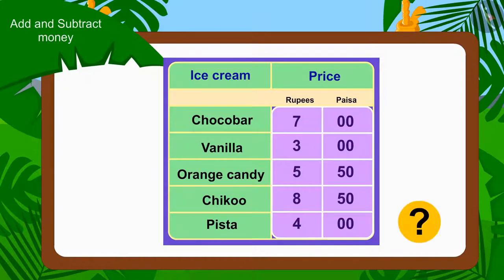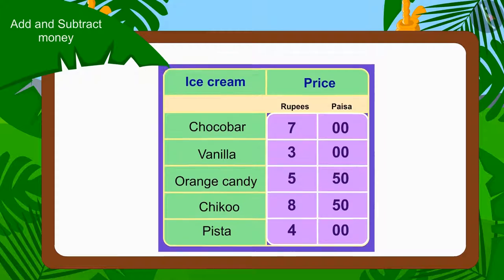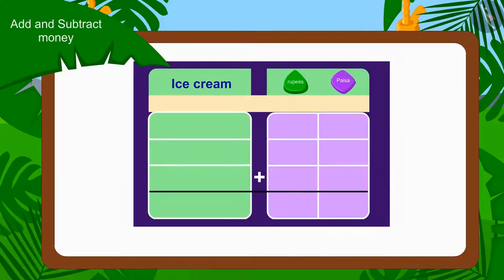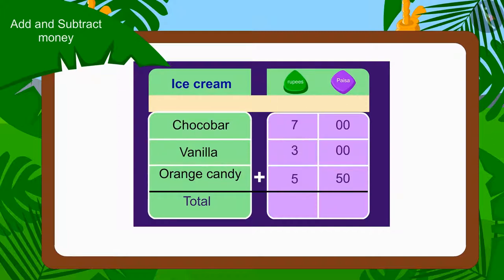Kids, can you help them? Come, let's solve it together. To know the total amount, we have to add the prices of all three ice creams. We will first write the price of all three ice creams in rupees and paise.